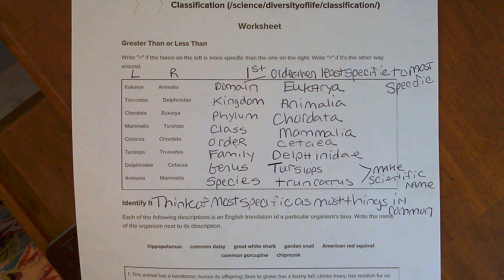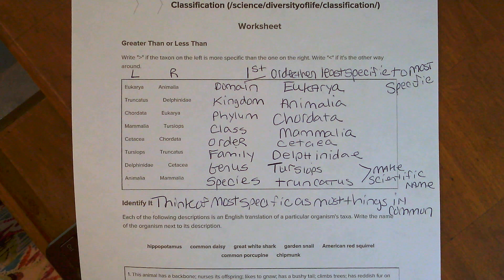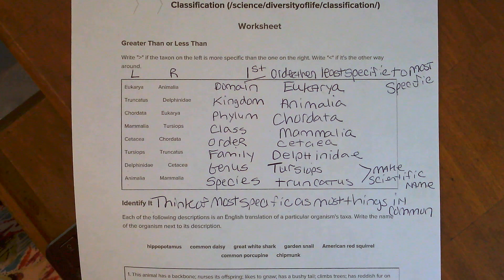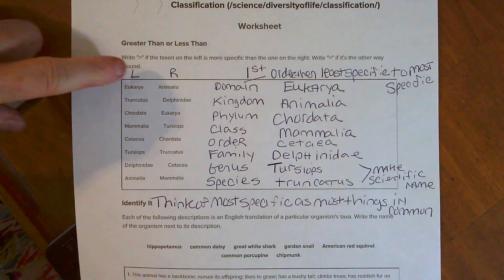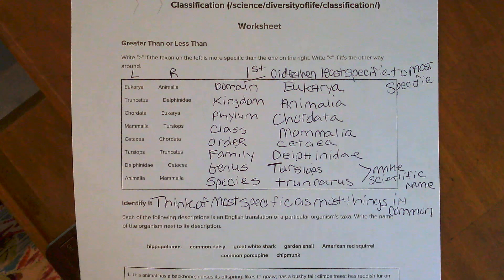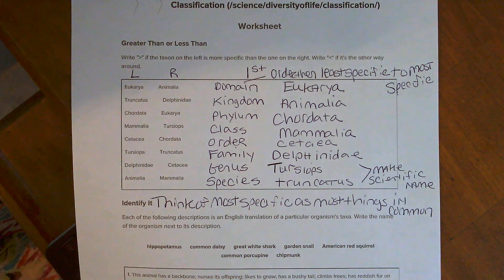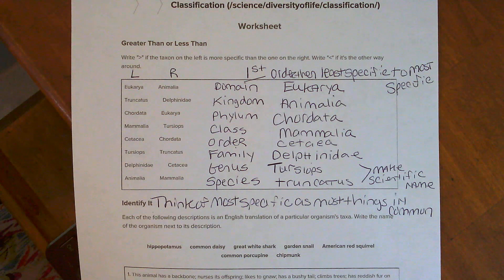On this worksheet, let's add these notes to it first. The instructions say write greater than if the taxon on the left — this is your left-hand side — is more specific than the one on the right. And I put a right arrow for the right one.